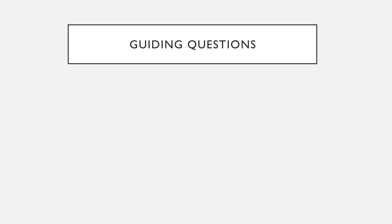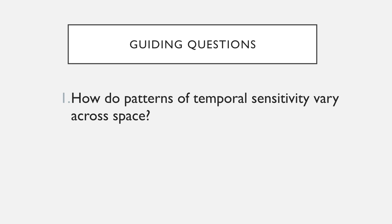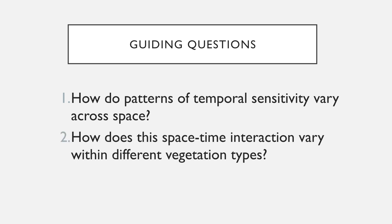This informs the two general questions of this talk. The first is how do patterns of temporal sensitivity vary across space in general? The second is how does the space-time interaction vary within different vegetation types? Previous patterns reflect differences across vegetation types, but we have not been able to test how this pattern may look within distinct vegetation types, simply due to limitations in how extensive our datasets are with plot-level clipping.